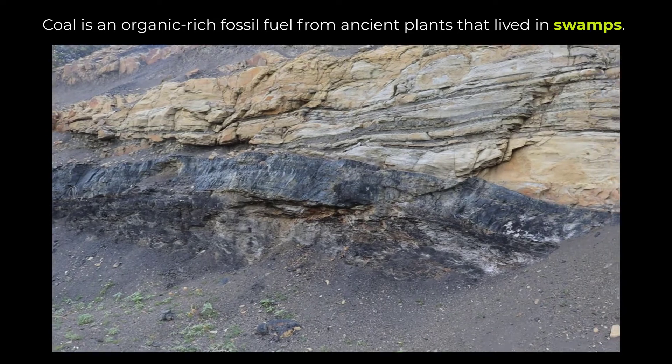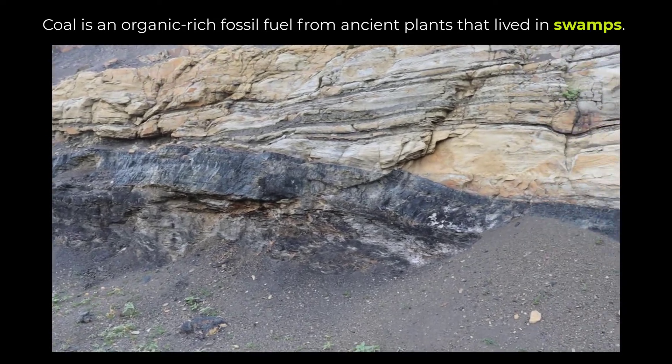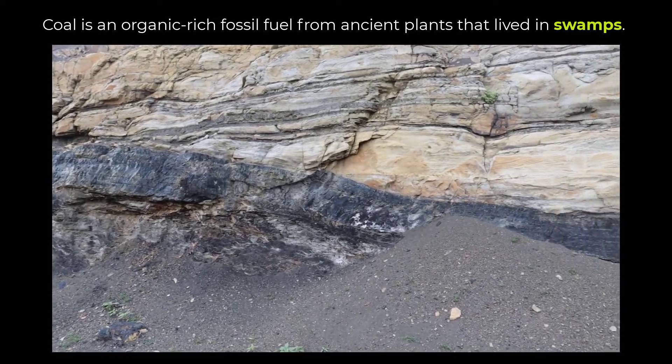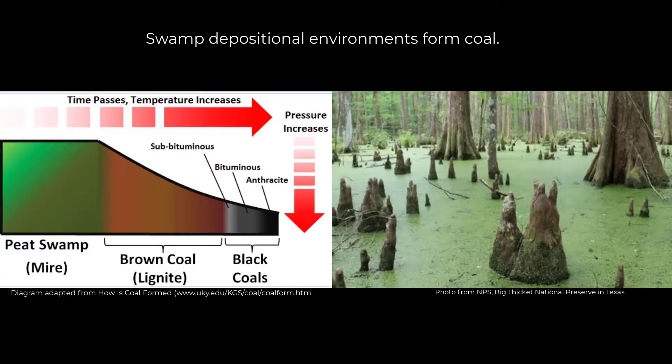It represents a swamp environment. Swamps form in environments like you see here for Big Thicket National Preserve in Texas, and it starts off as peat, which is an organic mud.